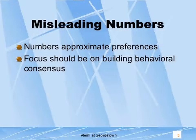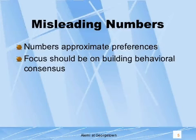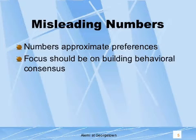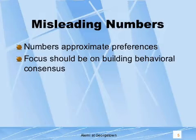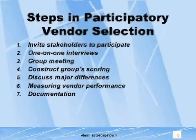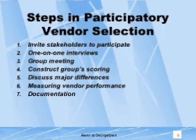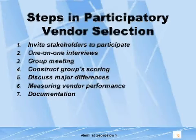Though value models allow us to quantify subjective concepts, the resulting numbers are rough estimates that should not be mistaken for precise measurements. In vendor selection, the numbers used in scoring various vendors should not be the focus of the activity. These scores are intended to offer a consistent method of tracking, comparing, and communicating rough subjective concepts. Vendor selection occurs through a seven-step process, each of which is further explained in the following slides.